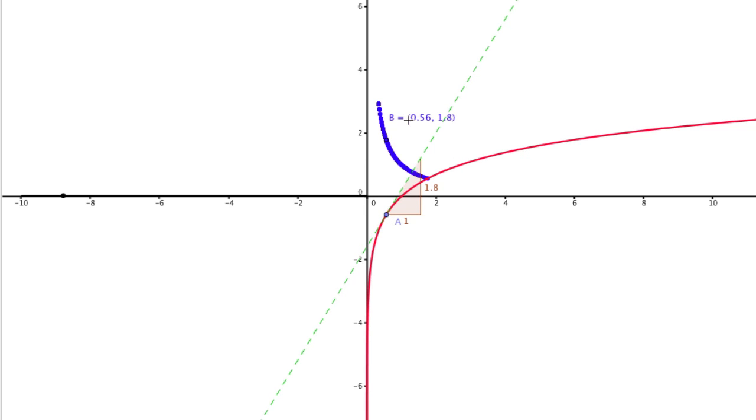So this x value is 0.56, same for a and b. But the y value of b is 1.8, which is the slope. So technically, this blue curve is the derivative of ln(x).